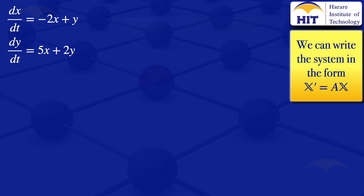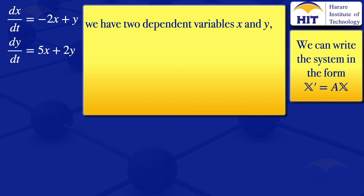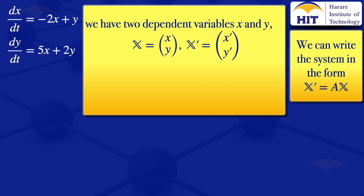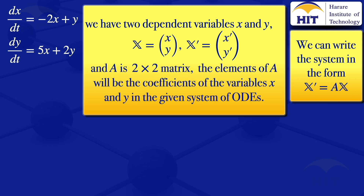In this case, we see that we have two dependent variables X and Y. So our X will be a column matrix which has the variables X and Y. X prime will be a column matrix which has the derivatives of X and Y. The matrix A will be a 2 by 2 matrix, and its elements will be the coefficients of the variables X and Y in the given system of ODEs.